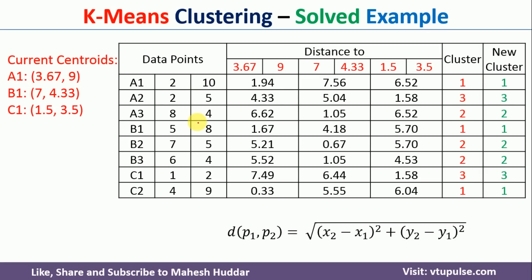The final clusters are: A1, B1, and C2 belong to cluster 1; A2 and C1 belong to cluster 3; and A3, B2, and B3 belong to cluster 2. This is how we can use the k-means clustering algorithm with Euclidean distance to divide data points into different clusters. I hope the concept is clear. If you liked the video, please like, share, subscribe, and press the bell icon for regular updates. Thank you for watching.